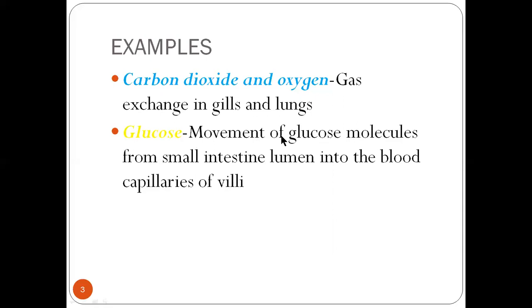And then glucose. Movement of glucose molecules from small intestine lumen into the blood capillaries of villi. Villi are small intestine folds. Glucose molecules go from small intestine lumen into the blood. When we eat, we take glucose. It is digested in our stomach and in the small intestine.